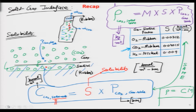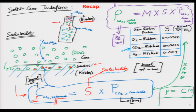Then we looked at the solid-gas interface, using the example of a bottle containing pressurized CO2 with a rubber cap. At the immediate surface of that solid-gas interface, some gas dissolves into the first layer of the solid, governed by the solubility equation: C equals S times the partial pressure of CO2 on the gas side, where capital S is the solubility. The concentration of CO2 molecules on the solid side is directly proportional to the gas-side pressure, and solubility values are available from literature.